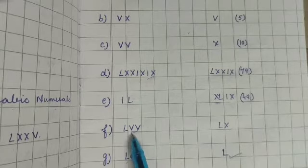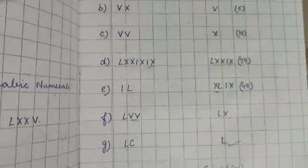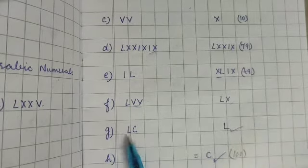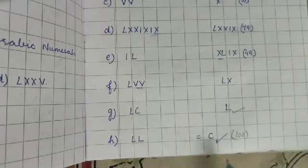50 plus 60, this is correct symbol. This is 100 minus 50, 50. This is a correct symbol. This cannot be subtracted, so it cannot be repeated. So this is the correct symbol, 100. Clear?